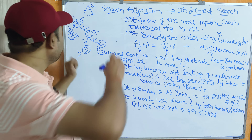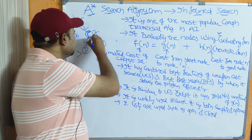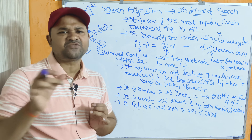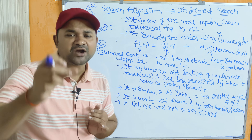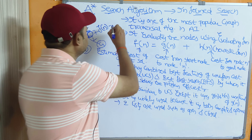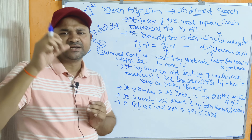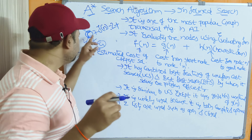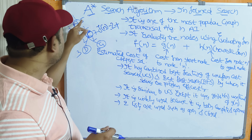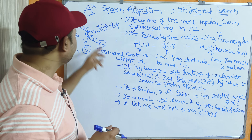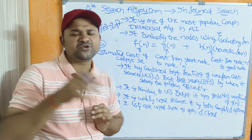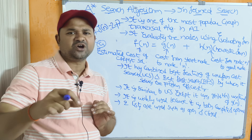Let's take an example. If we consider node C, let us find out f(n). The formula is f(n) = g(n) + h(n). g(n) is the cost from the start node A to node C, which is 2. h(n) is the heuristic function value — for node A it is 5, for node B it is 6, and for node C it is 7. So 2 plus 7 equals 9. Likewise, we calculate f(n) = g(n) + h(n) for each node.